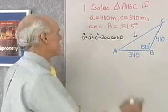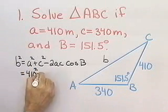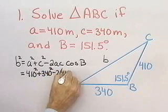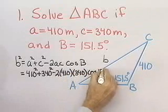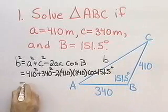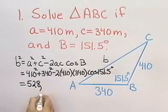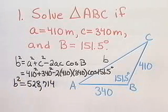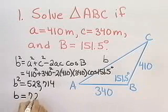Let's fill in these numbers for this situation. I have B squared which is going to be 410 squared plus 340 squared minus 2 times 410 times 340 times cosine of 151.5 degrees. I've worked that out on the calculator. That comes out to B squared equals 528,714. Now I take the square root of that to get B. Rounding to 3 significant digits, I get 727 meters.